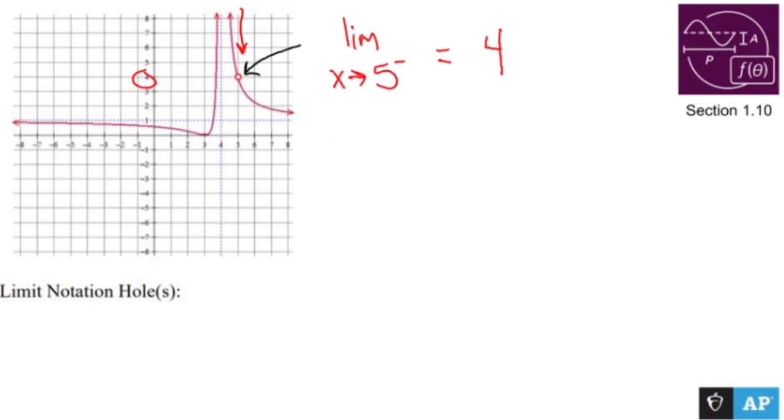Now coming from the right side is a lot of the same. If I head towards 5, which is my hole, I would write that out as the limit as x approaches 5 from the right side, which means a little plus sign right there.